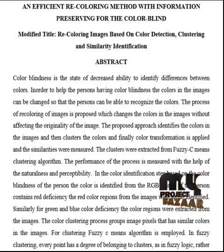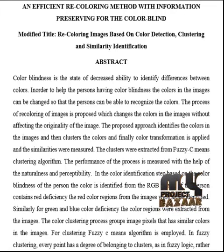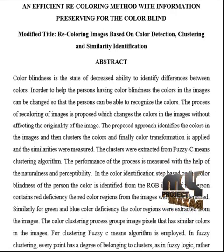The color clustering process groups image pixels that have similar colors. For clustering, the FACC means algorithm is employed. In FACC clustering, every point has a degree of belonging to the clusters, as in fuzzy logic, rather than belonging completely to just one cluster. A point on the edge of a cluster may have a higher degree compared to points in the center. Any point in the image has a set of coefficients given by the degree of belonging to the k-th cluster. With FACC means, the centroid of a cluster is the mean of all points weighted by their degree of belonging to the cluster.